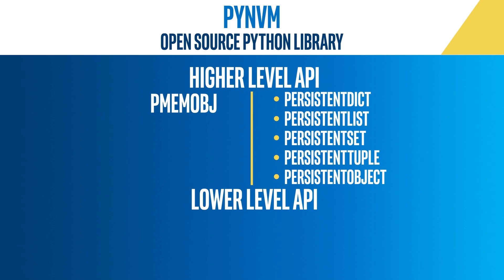The higher-level API also supports arbitrary objects for Python. The lower-level API consists of wrappers over some of PMDK's features, such as efficient logging to persistent memory or atomic updates to persistent memory resident arrays.